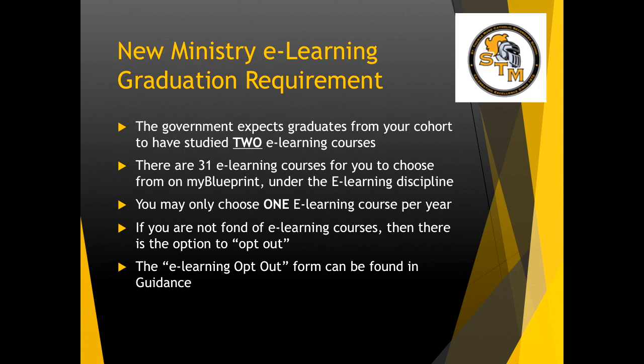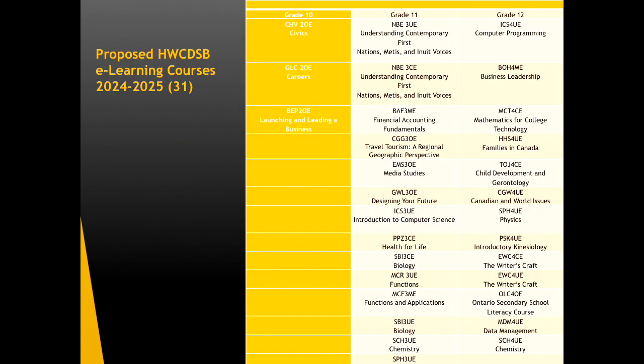The new ministry e-learning graduation requirement: your cohort is expected to have studied two e-learning courses. There are 31 e-learning courses for you to choose from on My Blueprint under the e-learning discipline. You may choose only one e-learning course per year. If you are not fond of e-learning courses, there is the option to opt-out — the e-learning opt-out form can be found in the guidance office. Please take a look at the list of proposed HWCDSB e-learning courses, also in your package, as there might be some options not available in day school, such as the child development and gerontology course.